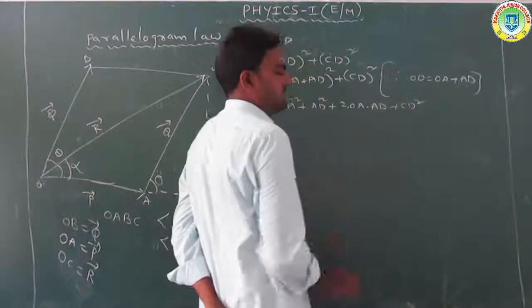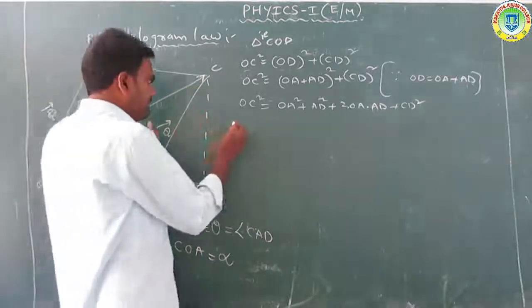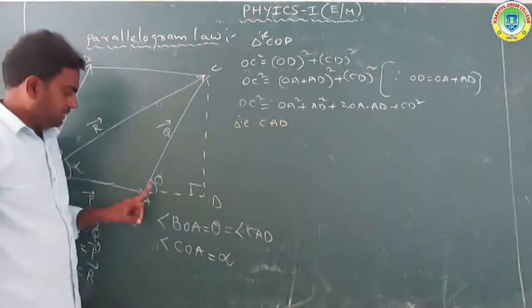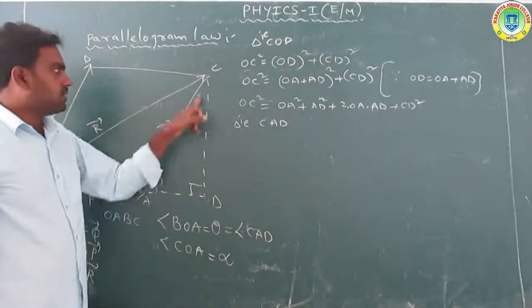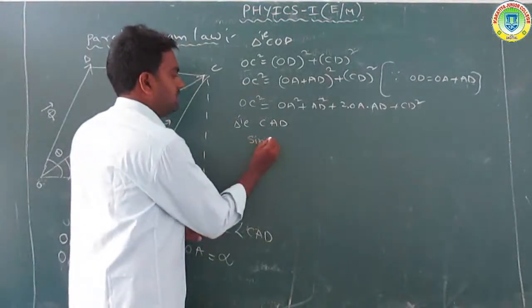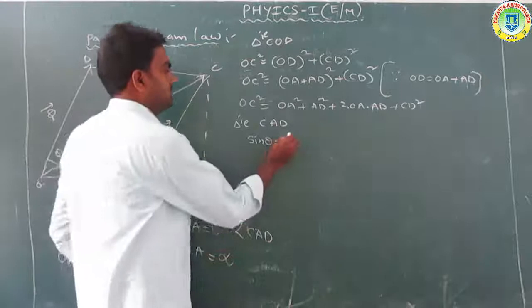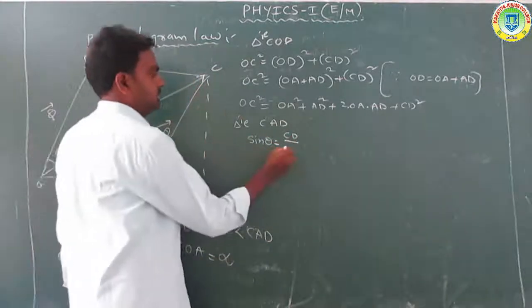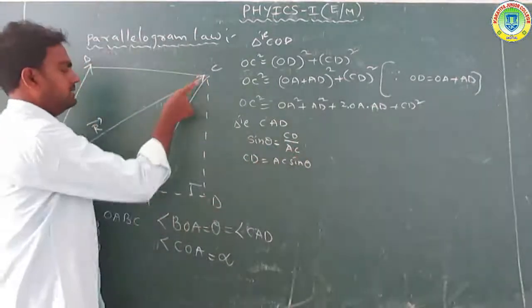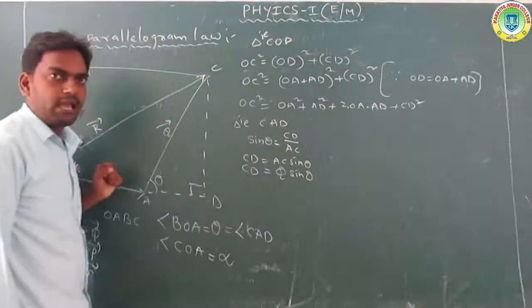By using sin theta: sin theta = opposite side / hypotenuse = CD / AC. So CD = AC·sin theta. Since AC is equal to Q, CD = Q·sin theta.